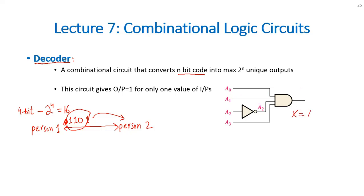The logical expression for this circuit can be given by A0, A1, A2 bar and A3. This is the circuit implementation to decode this code and the logical expression for this decoder is given by X equals A0, A1, A2 bar and A3.